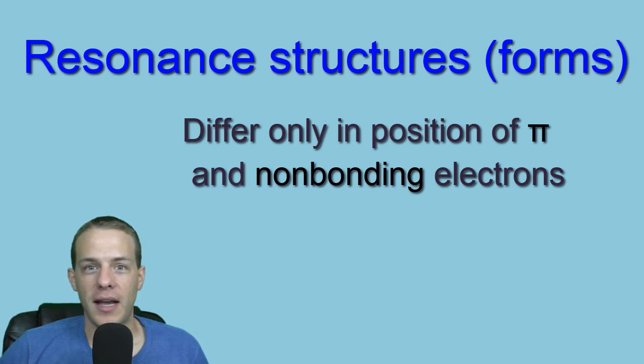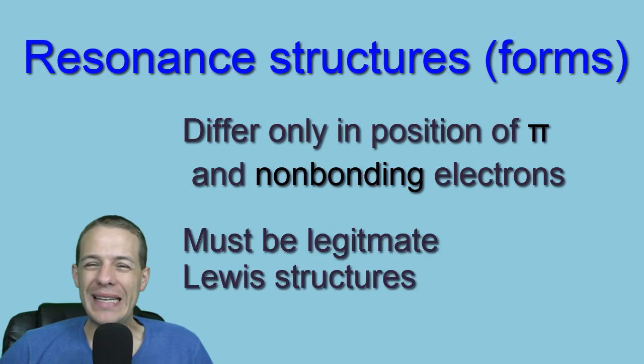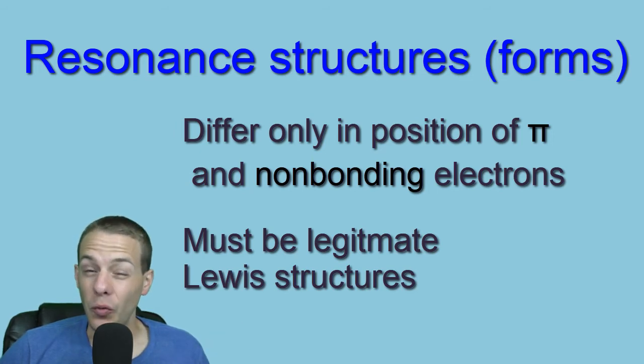So I'll repeat that one more time because it's kind of a run on sentence. So resonance forms only differ in the position of pi and non-bonding electrons. The other rule is that resonance structures must be legitimate Lewis dot structures. You can't have five bonds on a carbon. You can't really violate the octet rule.